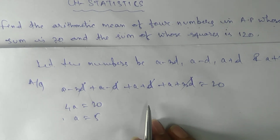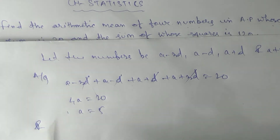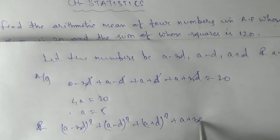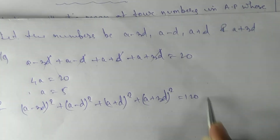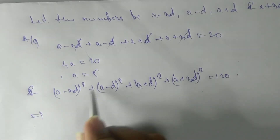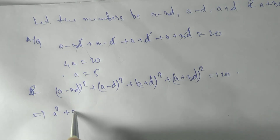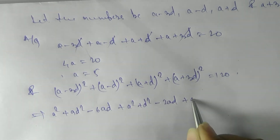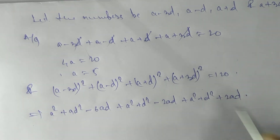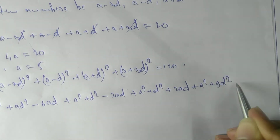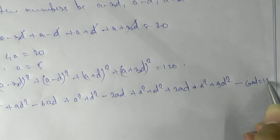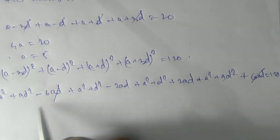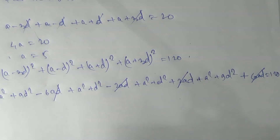The second condition: sum of squares is 120. So (a−3d)² + (a−d)² + (a+d)² + (a+3d)² = 120. Expanding: a²+9d²−6ad + a²+d²−2ad + a²+d²+2ad + a²+9d²+6ad = 120. The cross terms (±6ad and ±2ad) all cancel out.